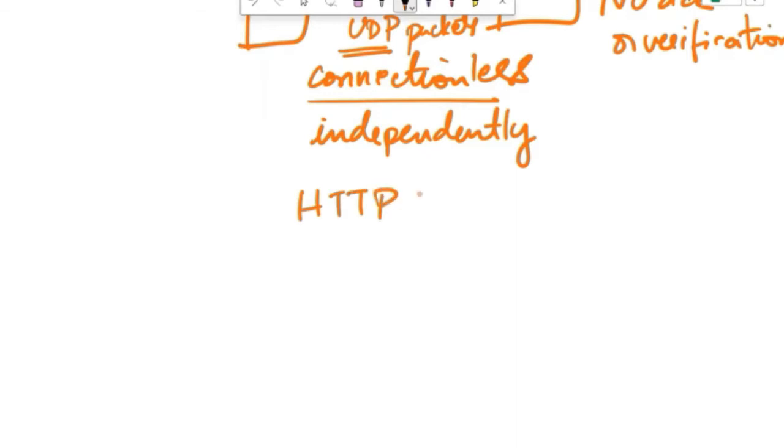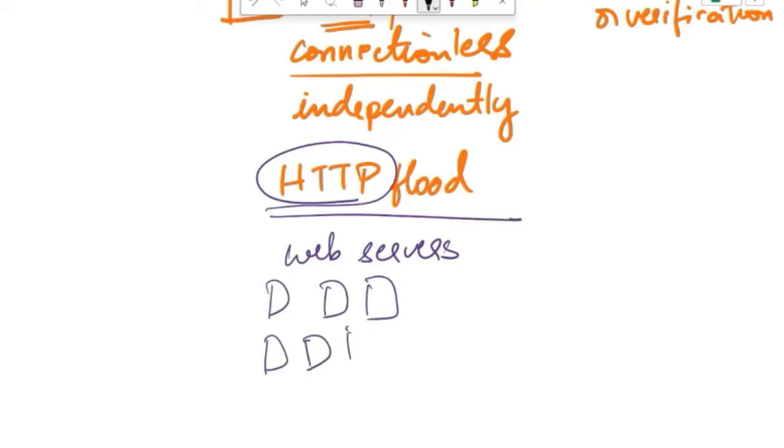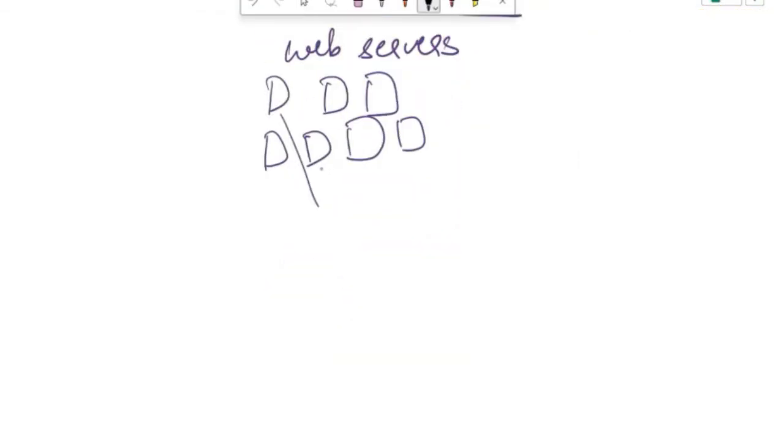The next type of DoS attack is HTTP flood. This attack targets web servers by overwhelming them with a flood of HTTP requests. HTTP stands for hypertext transfer protocol. The attacker uses a botnet or a large number of compromised devices to send a massive volume of HTTP requests to the target web server. These requests typically target specific URLs or web pages on the server.